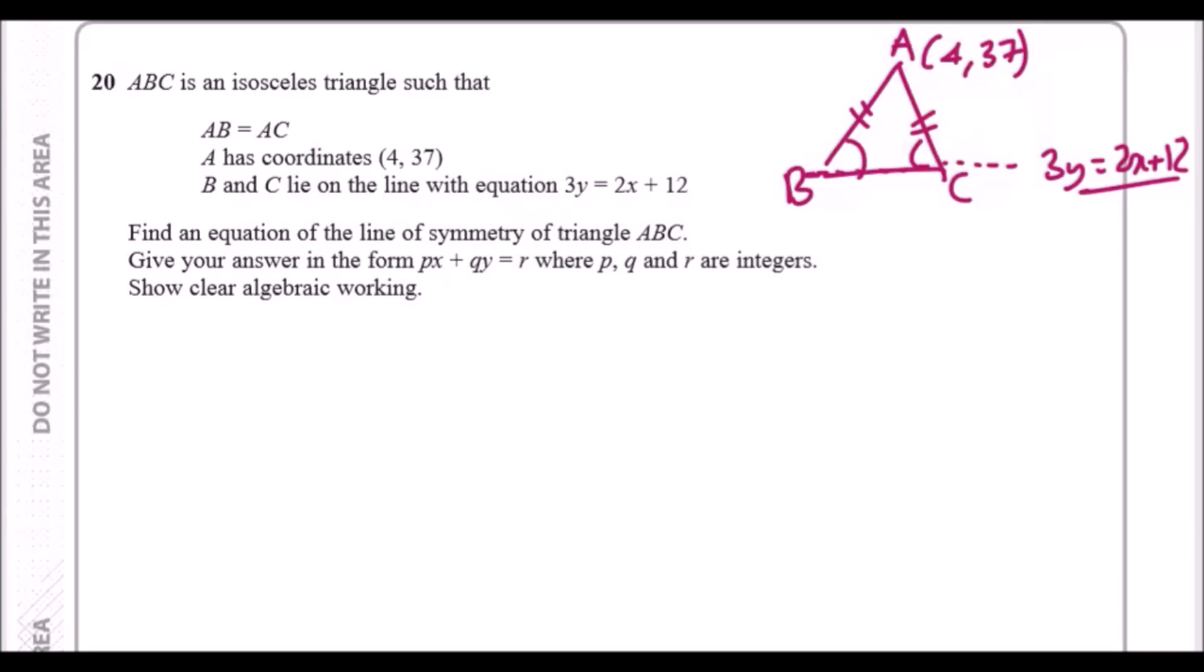Find an equation of the line of symmetry of the triangle. The line of symmetry is down here. Quick note: if this is a line of symmetry, that means we have two perpendicular lines, so that could be useful. Give your answer in the usual form.